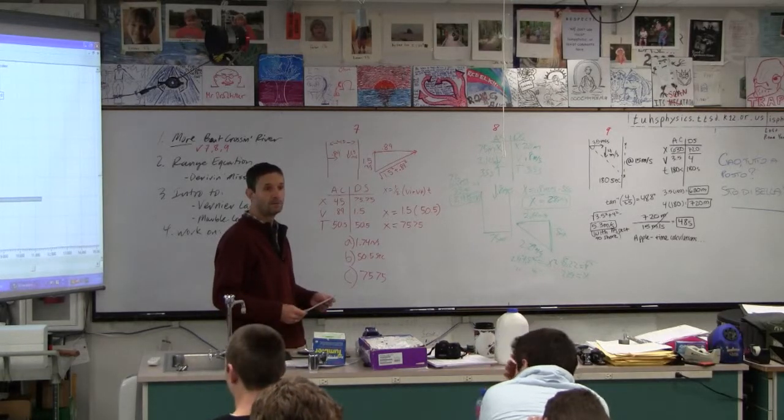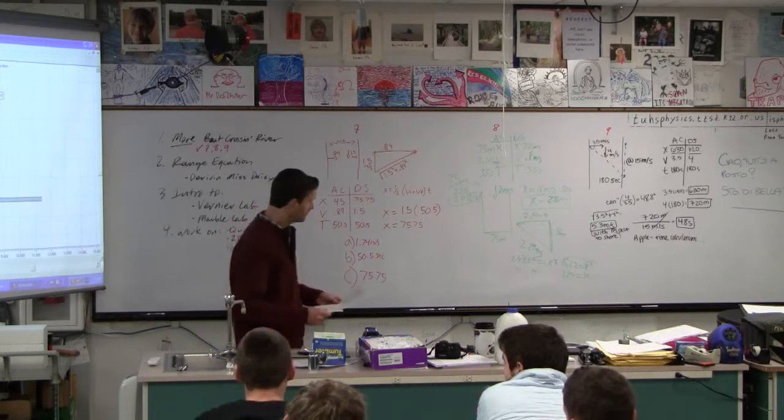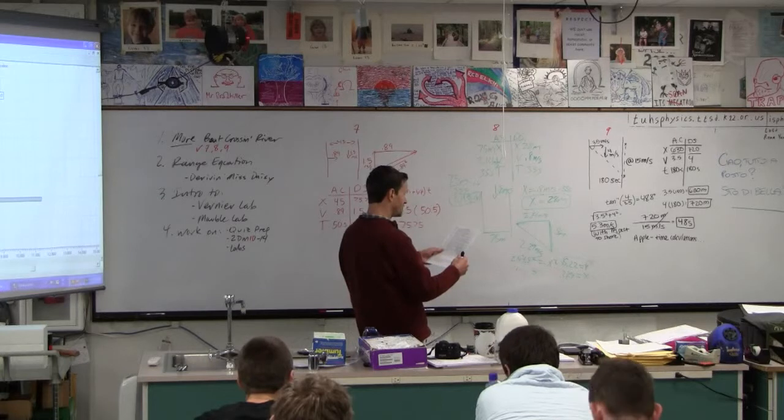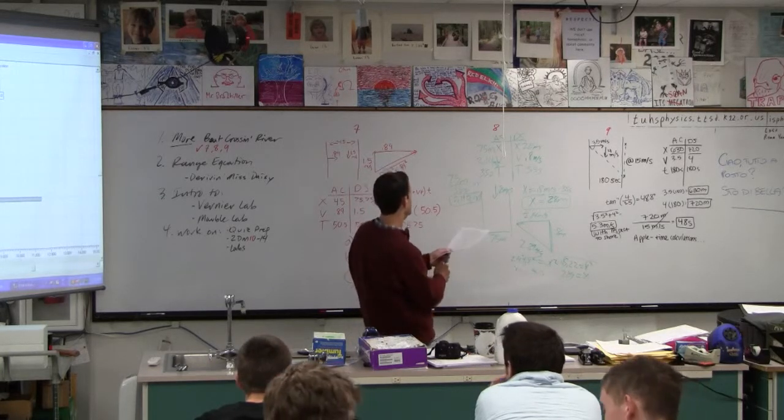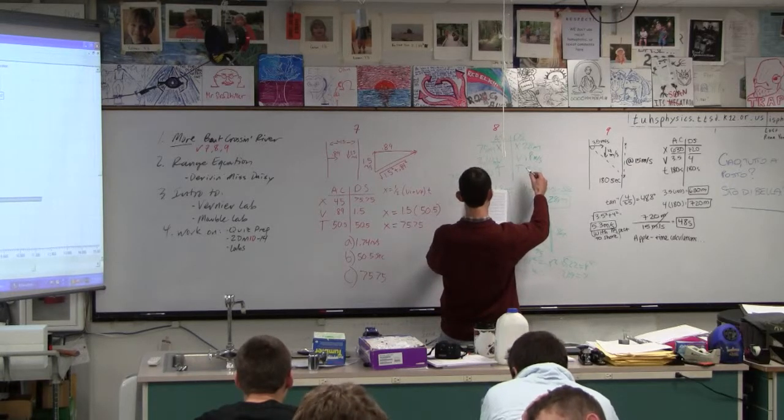We have a question on number eight. Okay, number eight says canoe heads straight across the river with a speed of 0.80 meters per second. The current is... there we go.